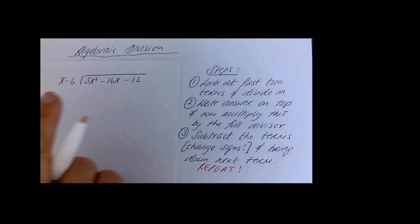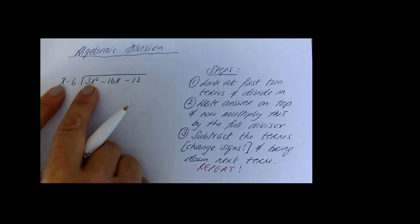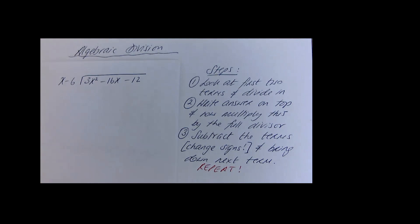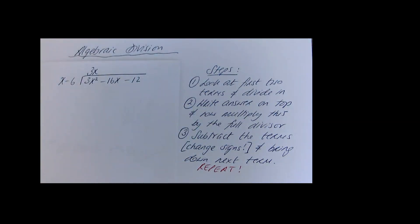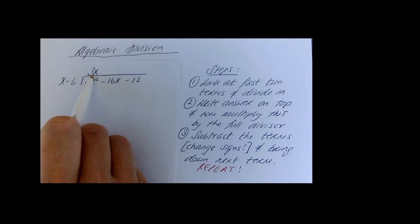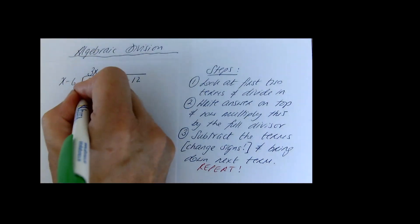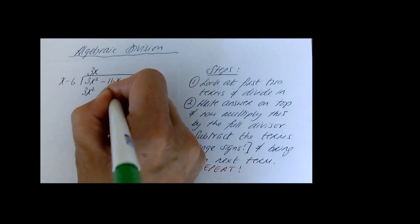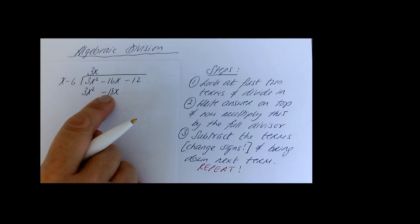For this question, look at the first two terms: x and 3x squared. What would you multiply by x to get 3x squared? The answer is 3x. Pause the video and try it yourself first. Step two: multiply 3x by the full divisor — 3x times x is 3x squared, and 3x times minus 6 is minus 18x.